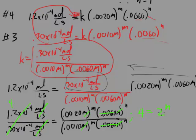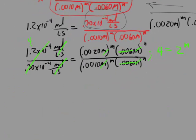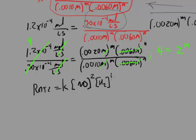Since 2^M = 4, M must equal 2 — second order in NO. That completes part I. For part II, the overall rate law is: rate = K × [NO]² × [H₂]¹. This rigorous approach works regardless of whether concentrations are the same across experiments — you substitute the known order N and solve for M.